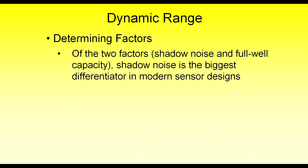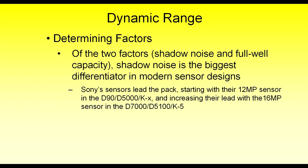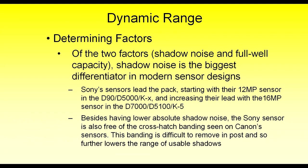Of those two factors — shadow noise and full well capacity — it's the shadow noise that has the biggest differentiator in modern sensor designs. And this is where Sony's sensors lead the pack. They really started their lead with their 12-megapixel sensor, used in the Nikon D90 and D5000 as well as the Pentax KX. They further increased that lead with their latest 16-megapixel sensor, used in the D7000 and D5100 as well as the Pentax K5. Aside from having a lower amount of absolute shadow noise, another major advantage the Sony sensor has is that its noise is completely free of cross-hatch banding, which is seen on other designs — particularly the Canon sensors. It basically looks like somebody scribbled horizontal and vertical lines across the image in a repeating pattern, which becomes very obvious to the viewer, unlike normal noise which is random and sometimes blends into the tonal content.